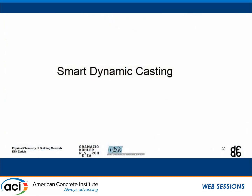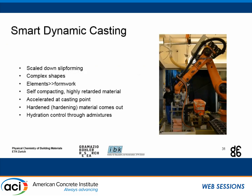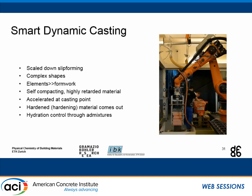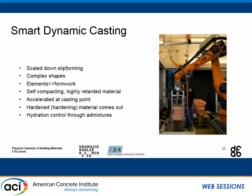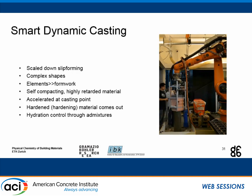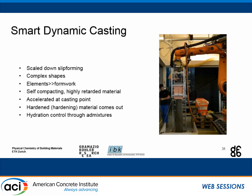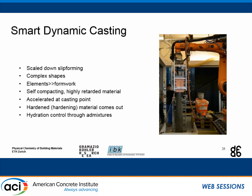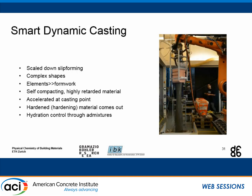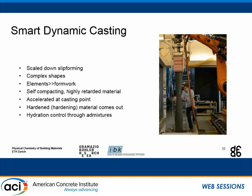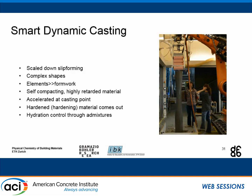The flagship project of Professor Flatt's group is Smart Dynamic Casting, which we started about five or six years ago. Smart Dynamic Casting is a scaled-down version of slip forming to produce complex shapes, where the formwork can be rigid or flexible. You pump in material that is highly retarded — we use sugar to retard it and achieve a large open time — and then it gets accelerated right at the casting point so we control the hydration right when it comes out. This is effected through chemical admixtures.